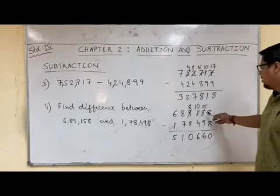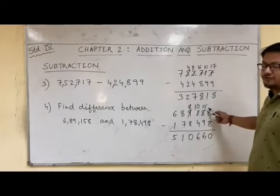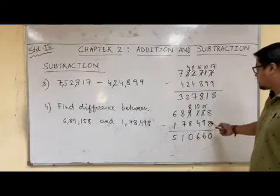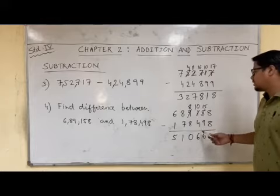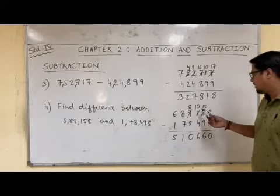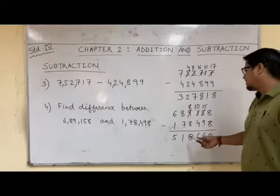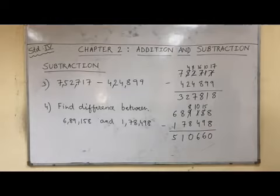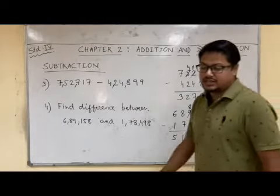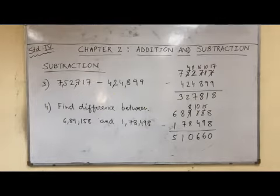Let us revise this sum once more. 8 minus 8 is 0. 5 minus 9 is not possible, so we borrowed and it became 15. 15 minus 9 is 6. 0 minus 4 is not possible, so we borrowed 1 — it became 10. 10 minus 4 is again 6. 8 minus 8 is 0. 8 minus 7 is 1. And 6 minus 1 is 5. So this is how we do subtraction of numbers with the borrow technique.